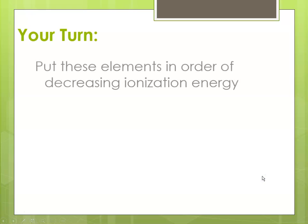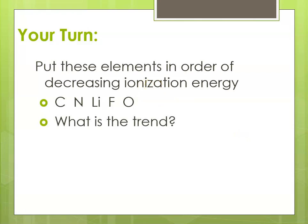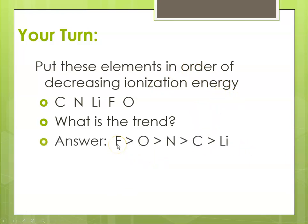Now let's put the same elements in order of decreasing ionization energy. They're all in the same period, and ionization energy increases from left to right. So the highest ionization energy would be on the far right. If we're listing in decreasing order, fluorine would have the greatest ionization energy because it's all the way to the right, and lithium would have the smallest because it's all the way on the left.